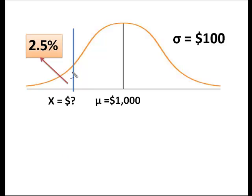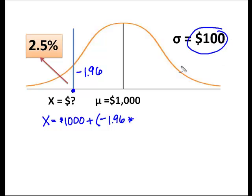All right, so I know that this value falls 1.96 standard deviations from the mean, but I also know that it falls a negative 1.96 standard deviations from the mean. So I'm going to use my formula to say that x is equal to the mean, which is $1,000, plus z, which in this case is a negative 1.96, times the value of the standard deviation, this $100.